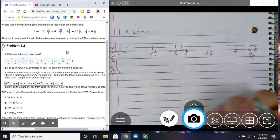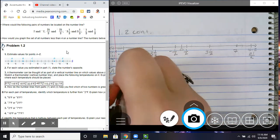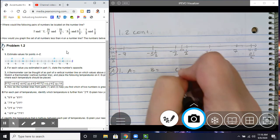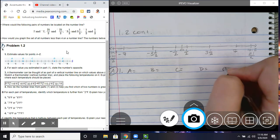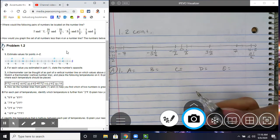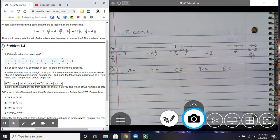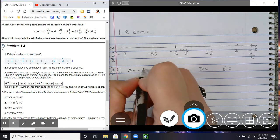Number 1. It says, estimate the values for points A through E. So, I'm going to put A, B, C, D, E, yeah, okay. So, looking at point A right here, this is where I'm at. If you look, you can see that to the left is negative 8, and then A, and then negative 6. Clearly, it is going by 1s. So, between negative 8 and negative 6 going by 1s would be negative 7.